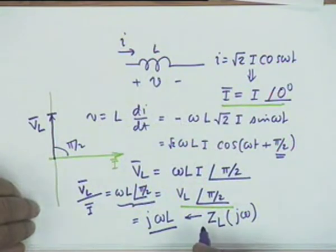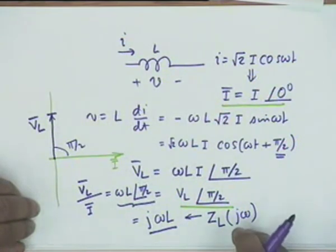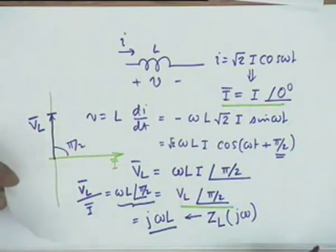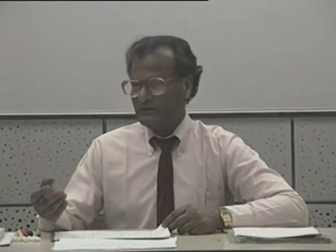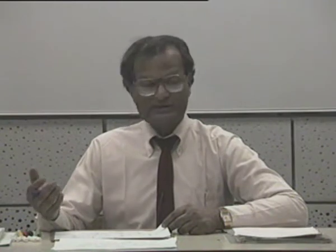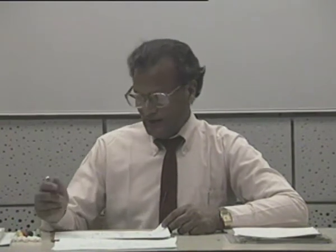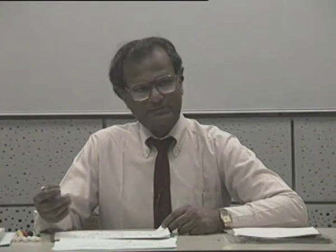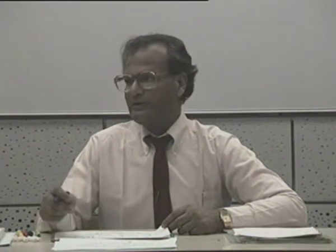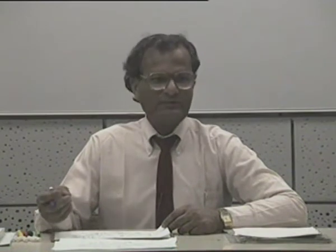I must caution you: j omega L is not a phasor — it is a complex quantity. A phasor is a current or voltage which represents the corresponding time-domain quantity; it is a transform of a current or voltage. The impedance j omega L is not a phasor — it is simply a complex number representing the impedance of the inductor at sinusoidal frequency omega.